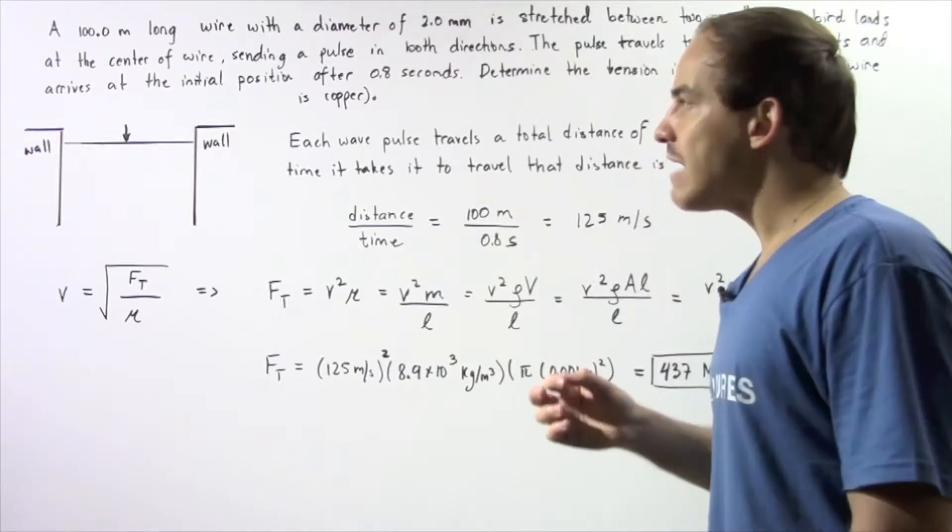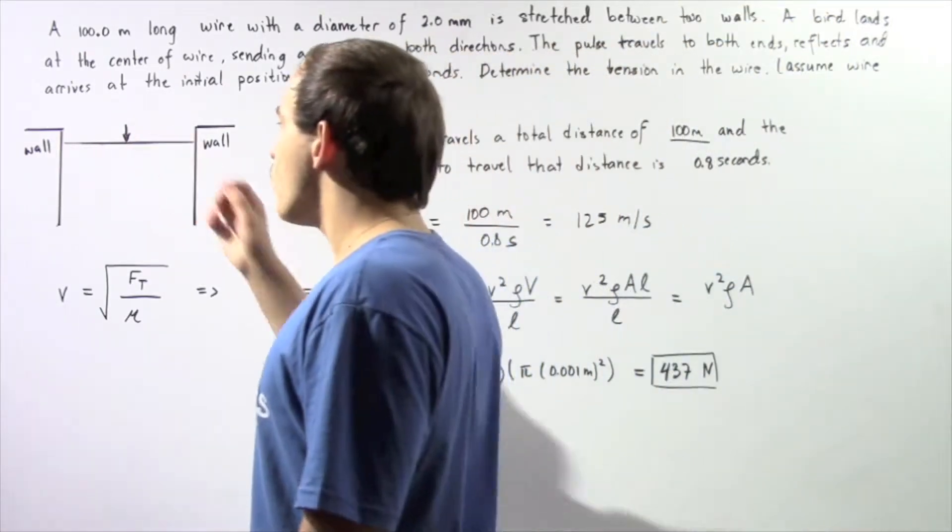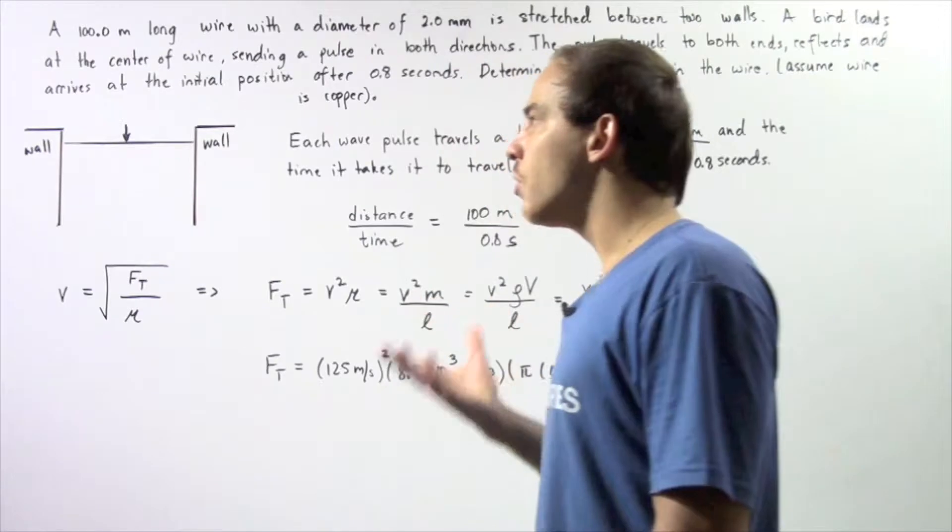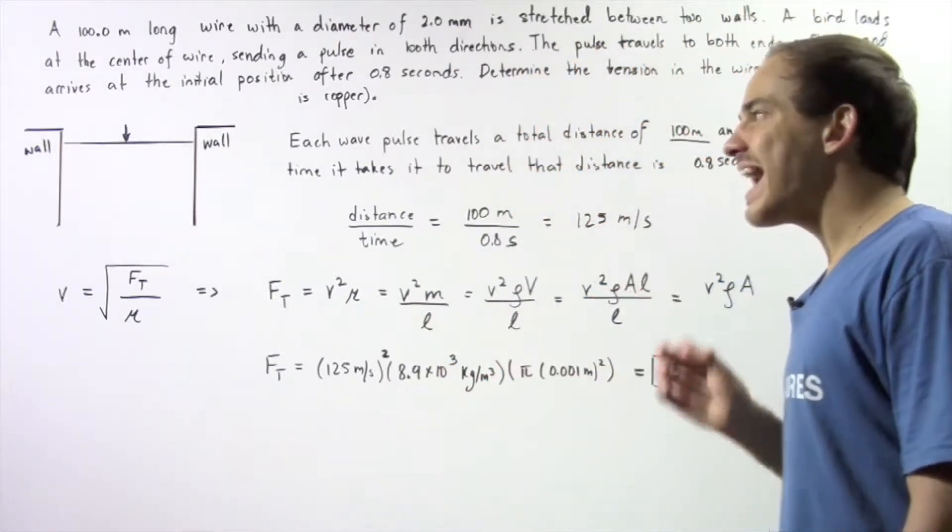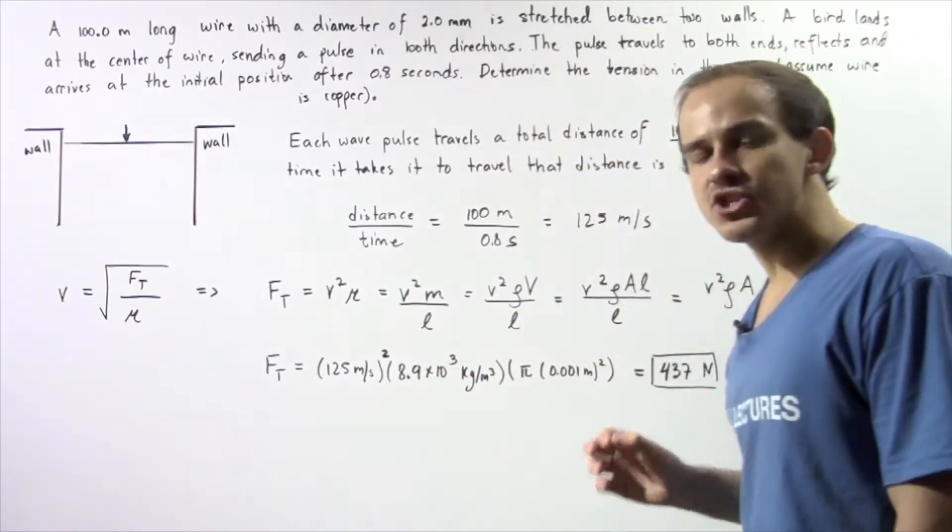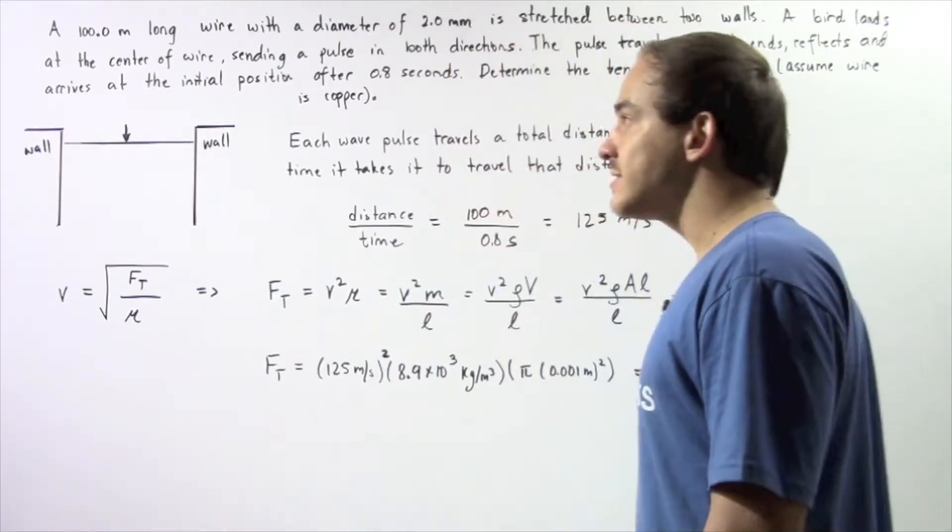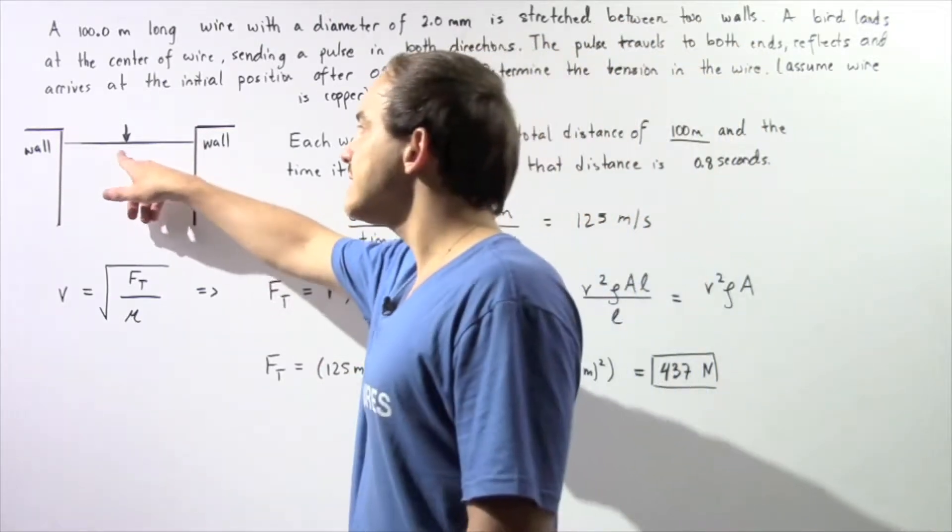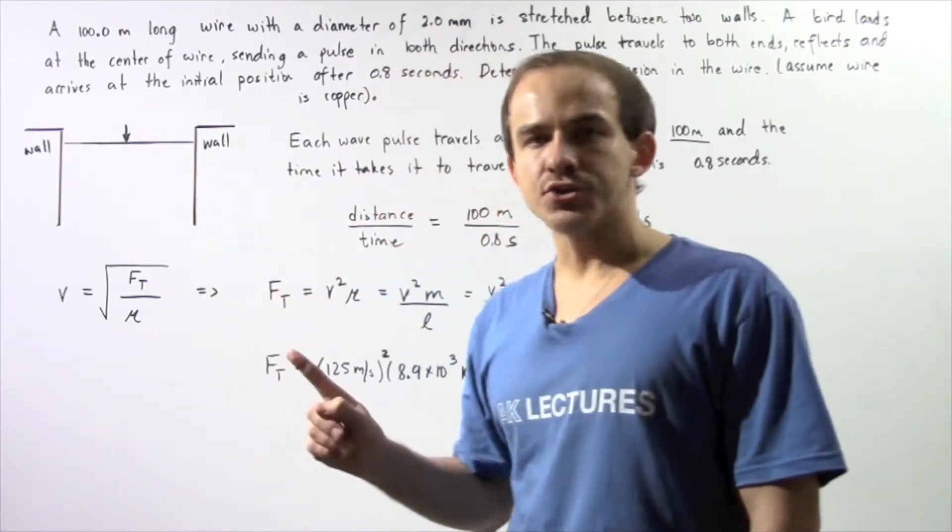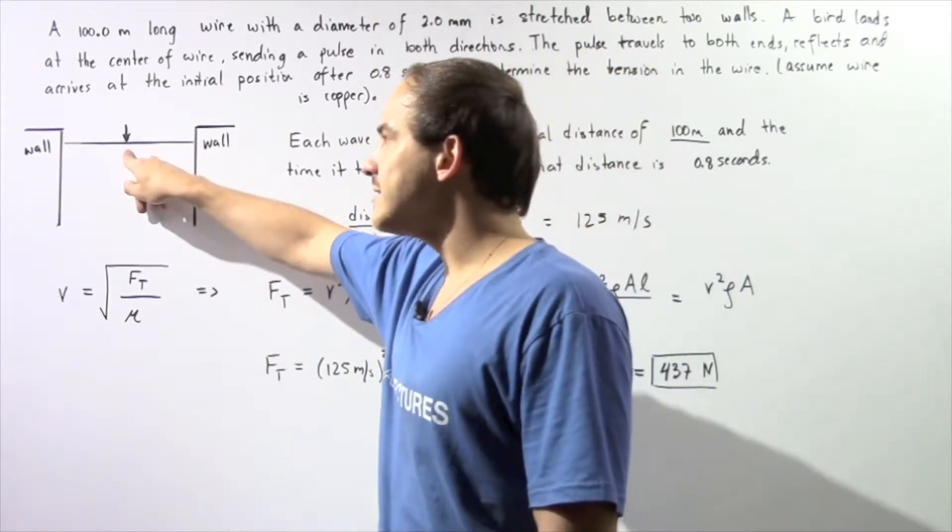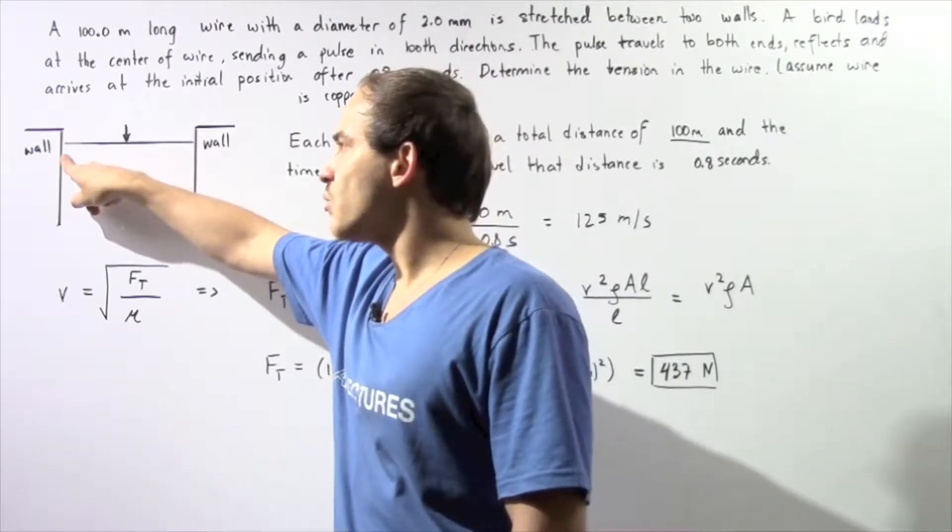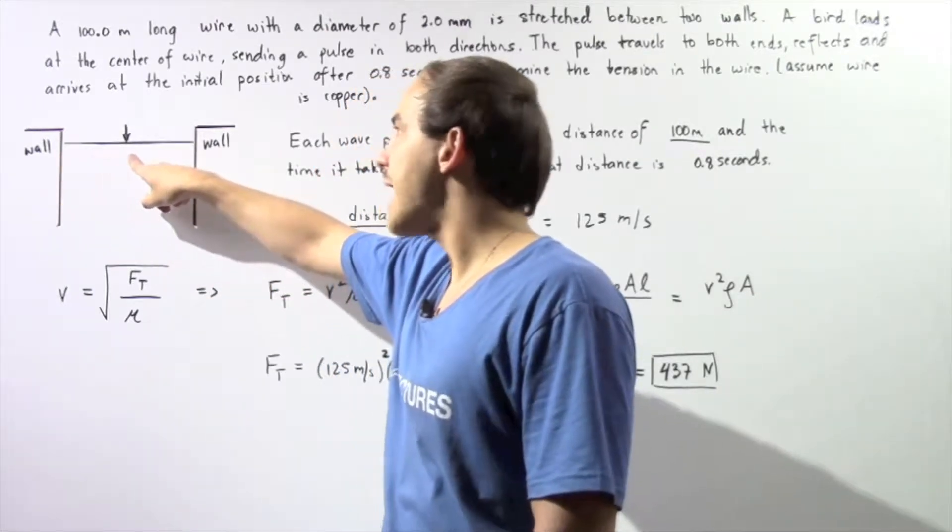So we have a bird that lands at the center of the wire and that creates a pulse. Now what exactly is the total distance that the pulse has to travel? Well the pulse has to travel a total distance of 100 meters. So it begins at the center, it travels 50 meters this way and then 50 meters back.